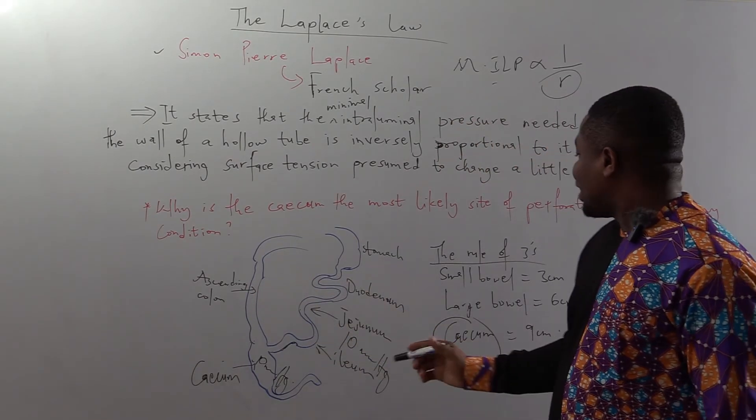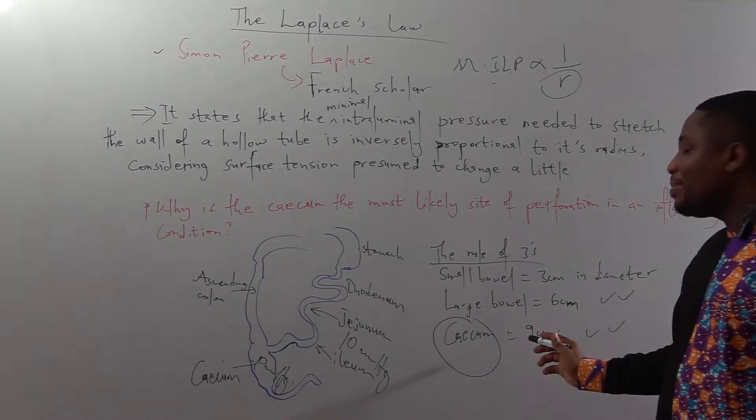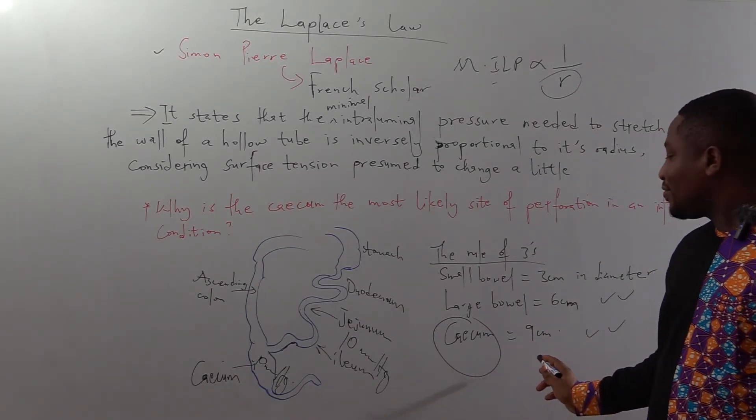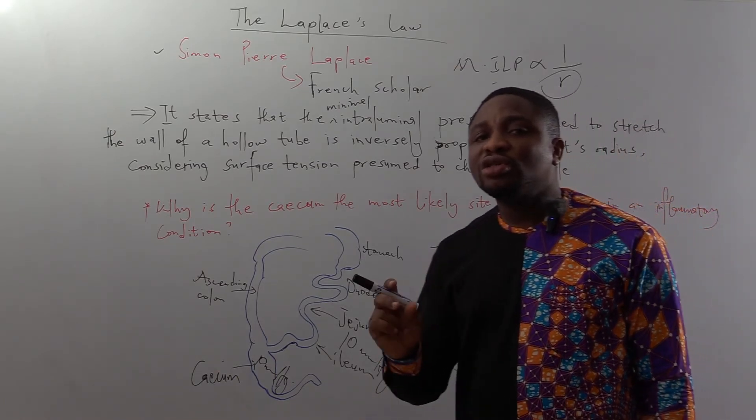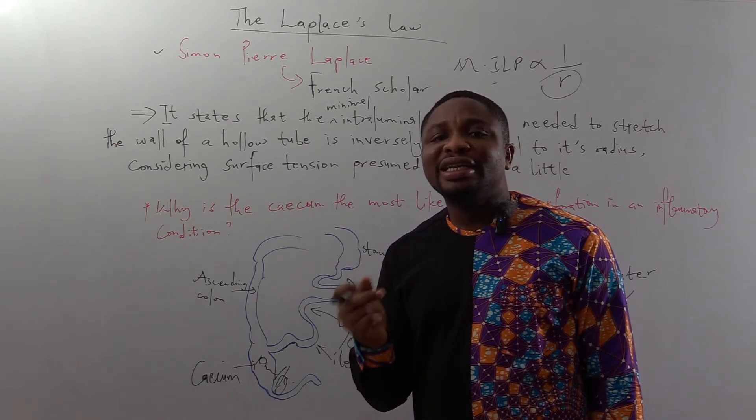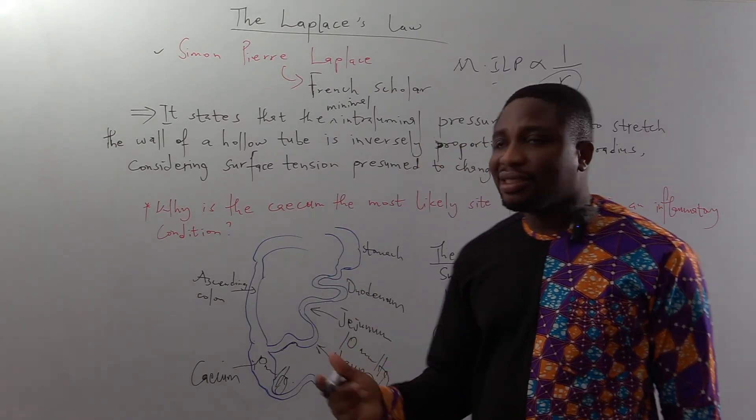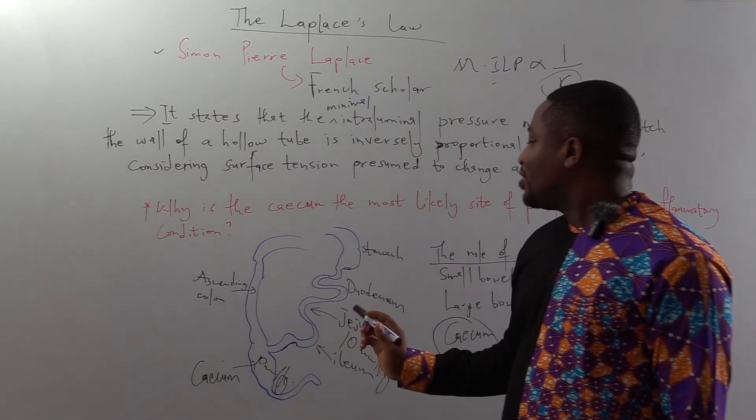Looking at the cecum, it has a diameter of 9 centimeters making the radius 4.5 and is the greatest. It means that the threshold minimal intraluminal pressure needed to distend it would be the least according to formula.